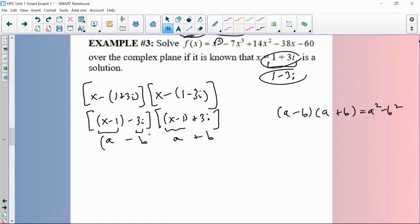So you have a minus b and this is a plus b. So I hope people see that, that the structure, once you see that, it makes multiplying this really, really easy. It's just a squared minus b squared.